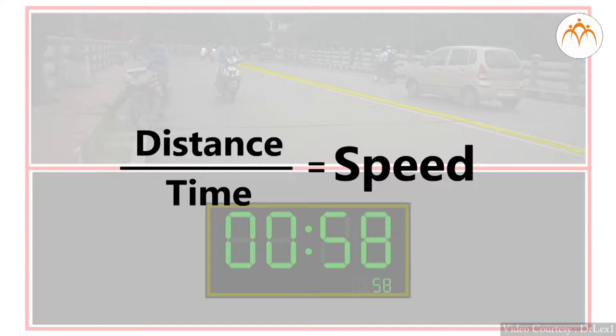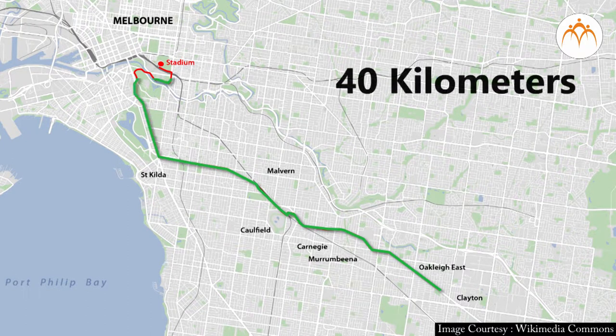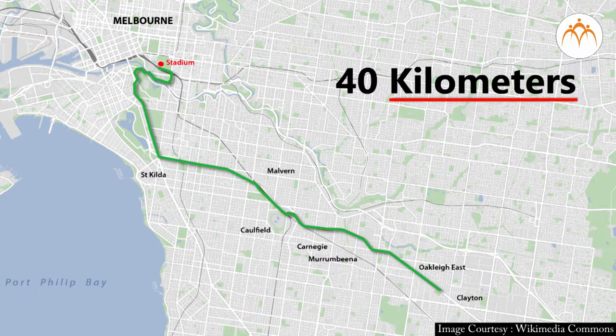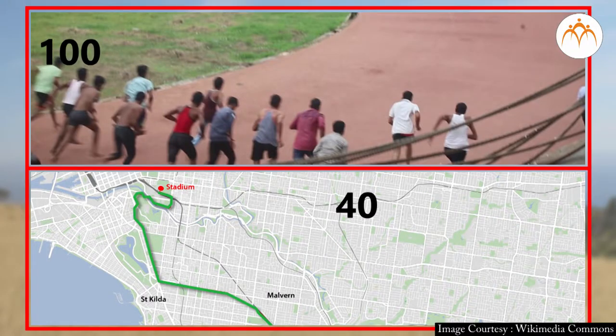Measurements of physical quantities are expressed in terms of units, which are standardised values. Distance covered for a marathon is measured in kilometres. Distance for the fast sprint is measured in metres. Without the units, it will be difficult to compare values in meaningful ways.